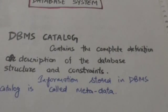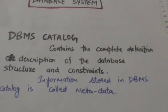DBMS catalog contains the complete definition or description of the database structure and constraints. The information stored in the DBMS catalog is called metadata.